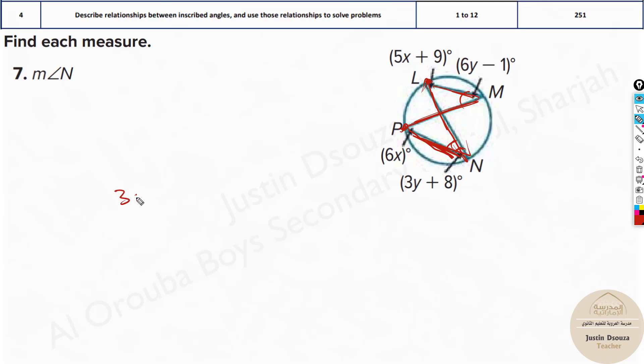Now we know M is how much? 3Y plus 8. That is equal to 6Y minus 1. So solve for Y. So take 3Y to the other side and this minus 1 to the other side. It will be 8 plus 1 equals 6Y minus 3Y. You will have 9 equals 3Y. Y equals 3. So measure of Y is 3.